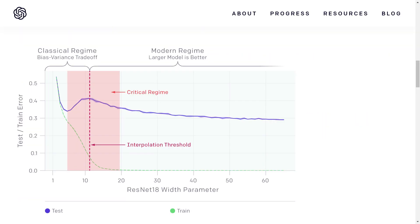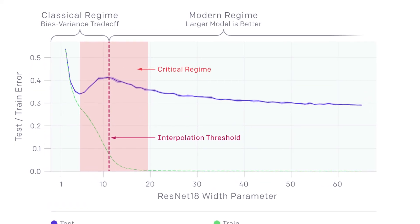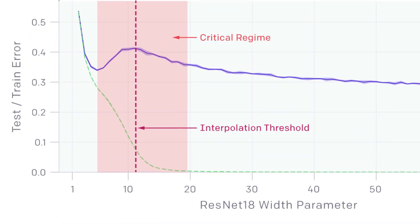This behavior seems to contradict the classical concept of the bias-variance trade-off. Nevertheless, it appears that it's a good idea not to give up too early and shrink the model size if a model is overfitting. Once the model size gets past the critical regime, the generalization gap might start improving again.